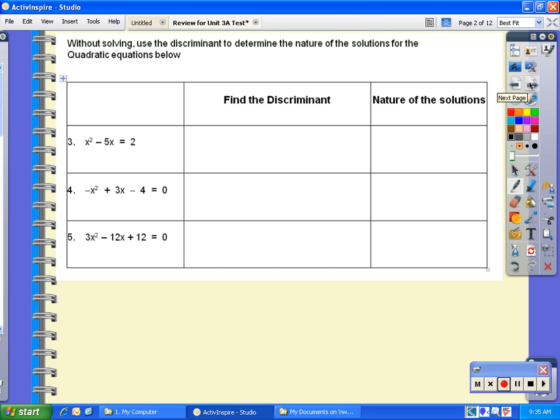The discriminant is just b² - 4ac. It does not include the radical, does not include the negative b or the over 2a, just the b² - 4ac.